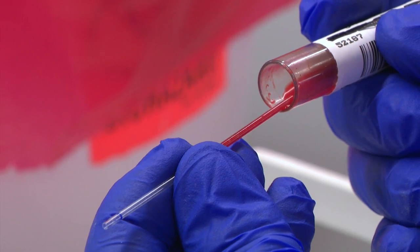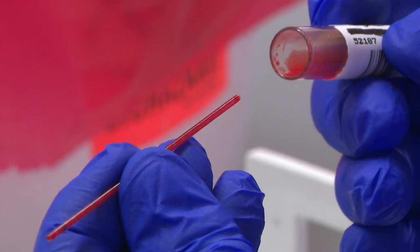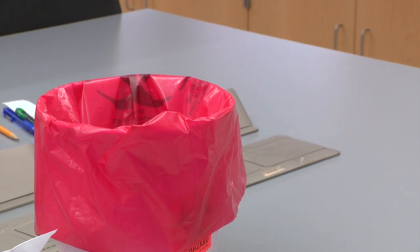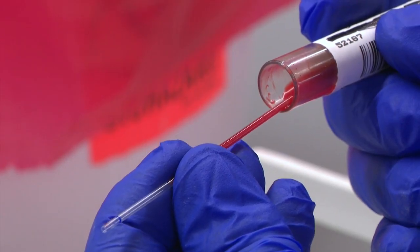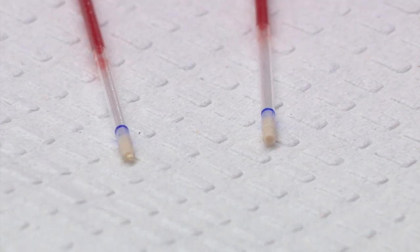If your sample runs completely through the tube so that you no longer have a dry end, discard the micro hematocrit tube and start over with a new tube. The clay should contact dry glass in order to hold blood during centrifugation. You need to be able to see a dry space in the tube between the clay and your blood sample.